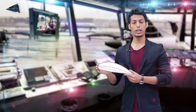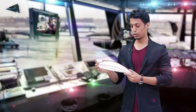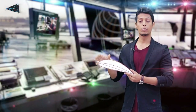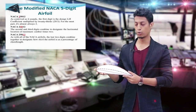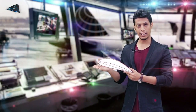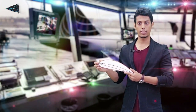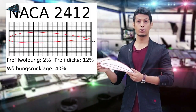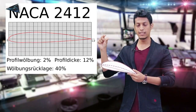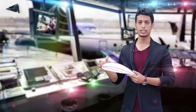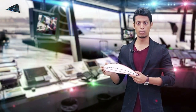Under the NACA system, there are groups: the 4-digit airfoil group, the 5-digit airfoil group, and the 6-digit airfoil group. The 4-digit NACA airfoil — for example, NACA 2412 — is a 4-digit airfoil. The group is designed according to the number of digits in the designation.